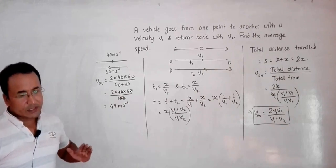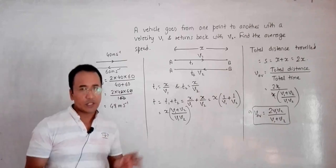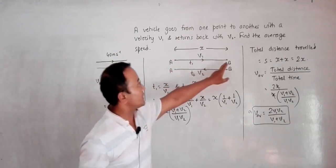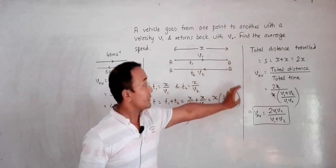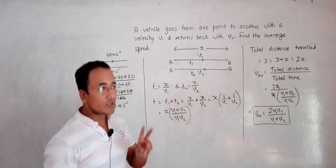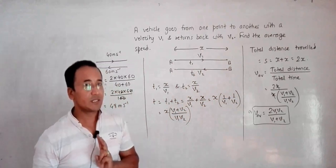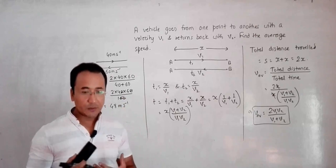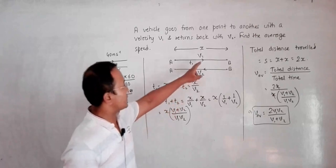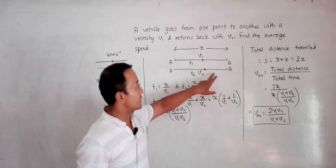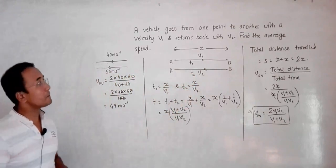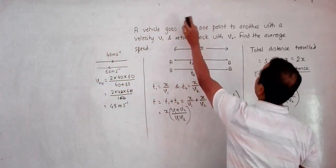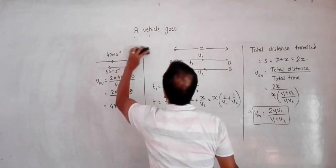Why is this so? During the equations of kinematics we assume velocity increases uniformly from 40 to 60. But here, from A to B the velocity is constantly 40 m/s, and from B to A it is constantly 60 m/s. These are two distinct steps of uniform velocity — not a uniform increase or decrease — and that is why the average comes out this way.